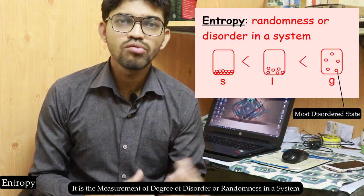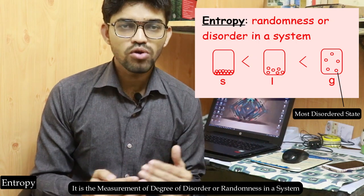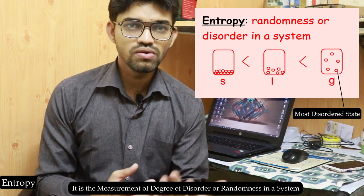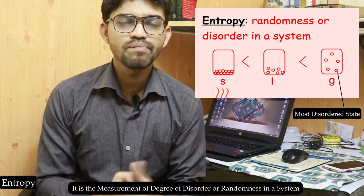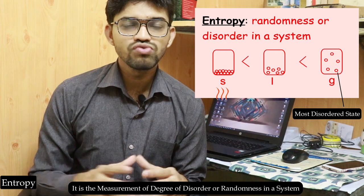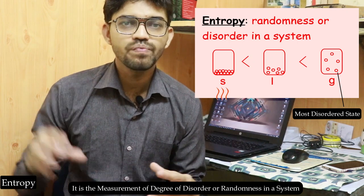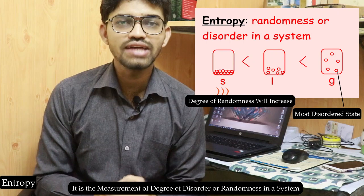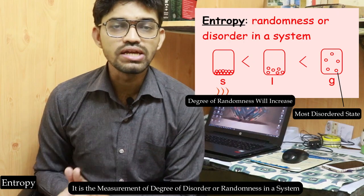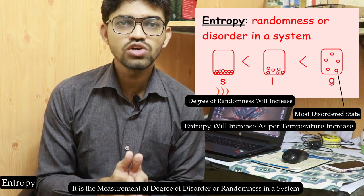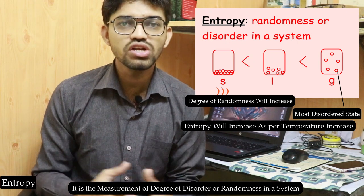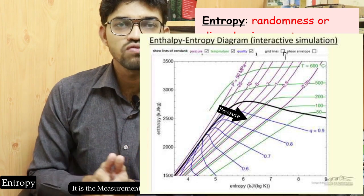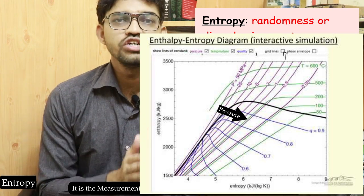In thermodynamics, as a process occurs and heat flows from one body to another, the molecules start vibrating due to the increase in temperature, and the degree of randomness increases — meaning entropy increases. Entropy is related to temperature: as temperature increases, entropy increases. It is also related to pressure: as pressure increases, entropy also tends to increase.